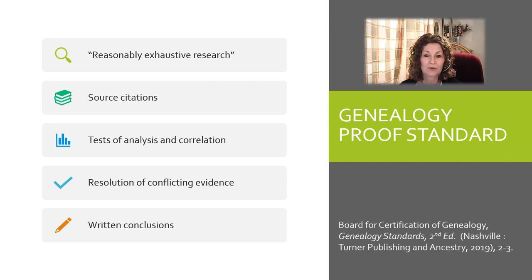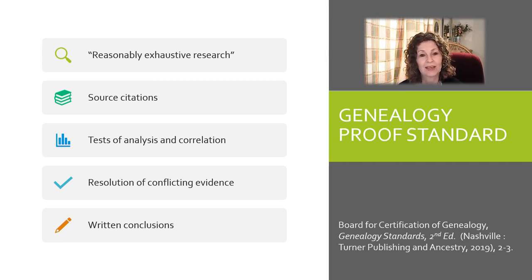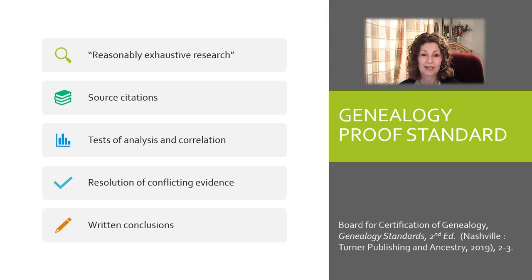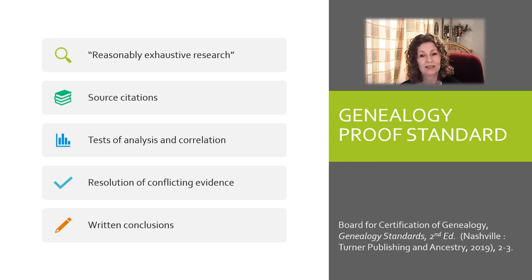The Genealogy Proof Standard was published in 'Genealogy Standards' by the Board for Certification of Genealogists. It says we should have reasonably exhaustive research — meaning you look for every record that could possibly give you information about your research question. We want source citations so we can get back to those sources — a breadcrumb trail anyone can follow. We want to test the analysis and correlation: do things fit, and have we resolved conflicting evidence? And finally, we write a conclusion.